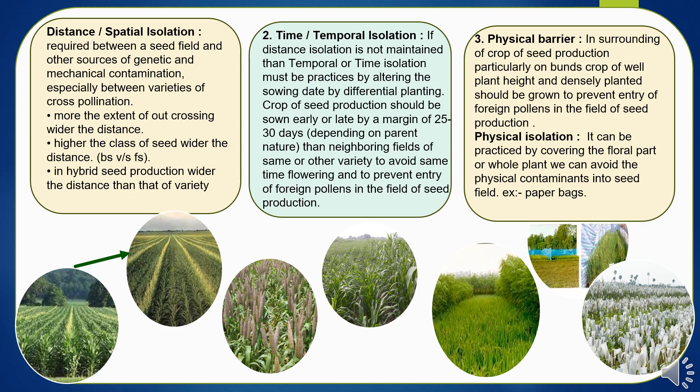Temporal or time isolation: if distance isolation is not maintained, then temporal isolation must be practiced by altering the sowing dates through differential planting. The crop for seed production should be sown early or late by a margin of 25 to 30 days, depending on the crop, to escape simultaneous flowering with neighboring fields of the same or other varieties, and to prevent entry of foreign pollens into the seed production field.